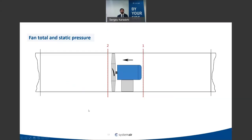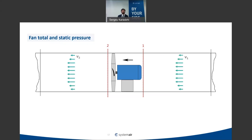When a fan is installed in a duct system, customers are sometimes confused about total versus static pressure. When you calculate your duct system losses, you get the difference of static or total pressure on the inlet and outlet of the fan. If the duct diameter is the same on both sides, the dynamic pressure is equal on both sides, meaning the difference in static pressures equals the difference in total pressures.